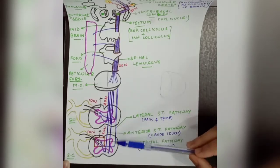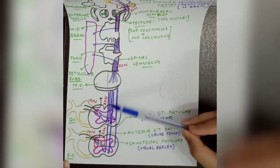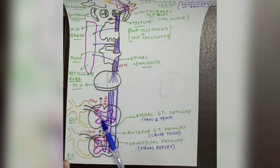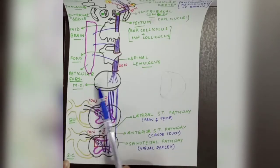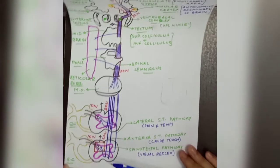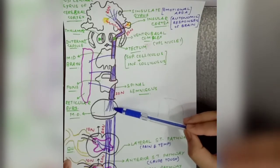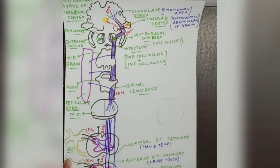These fibers of the lateral spinothalamic pathway and anterior spinothalamic pathway ascend upward. As they ascend, fibers from different levels of the spinal cord add up. The enterolateral spinothalamic neurons go medially and accumulate. When these fibers reach the medulla oblongata level, they join with other fibers and create a tract called the spinal lemniscus.